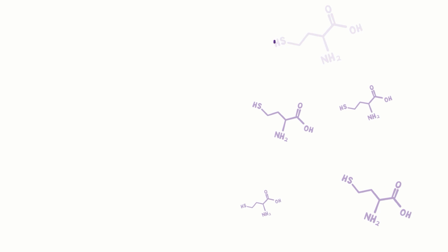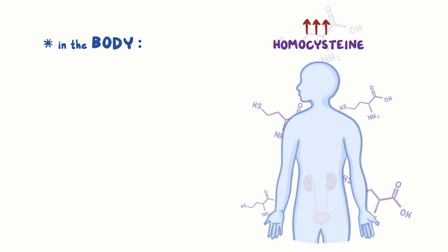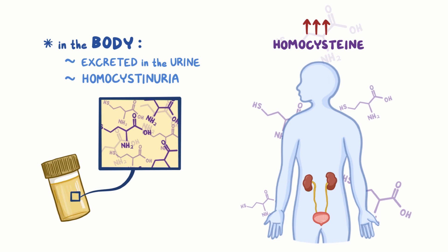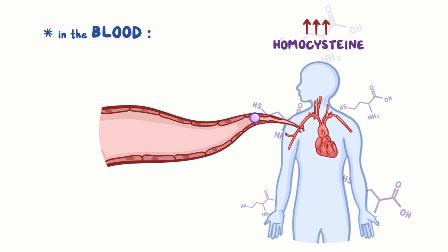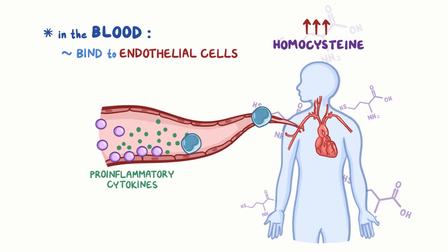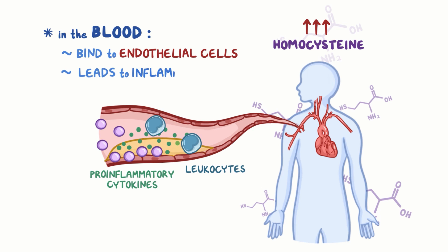Whatever the cause, when homocysteine builds up in the body, some of it is excreted in the urine, leading to homocysteinuria. It also builds up in the blood, where it binds to the endothelial cells lining blood vessels, causing them to secrete molecules called pro-inflammatory cytokines. These attract immune cells like leukocytes to the area and cause inflammation, which leads to atherosclerosis, or plaque buildup inside the arteries.